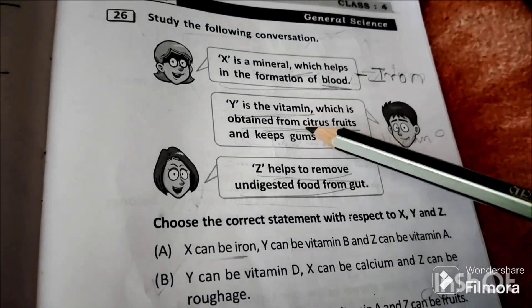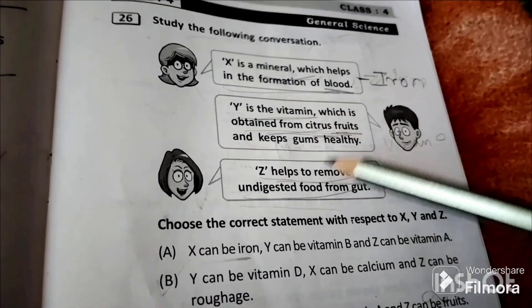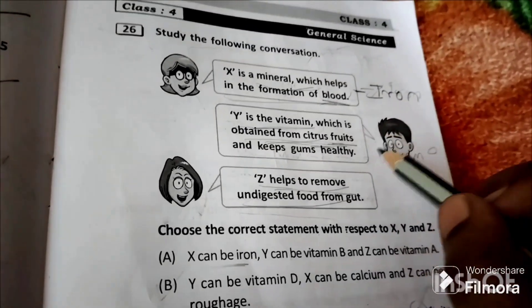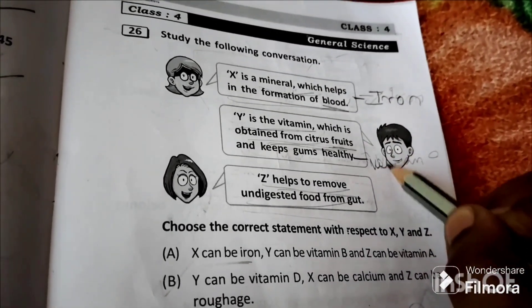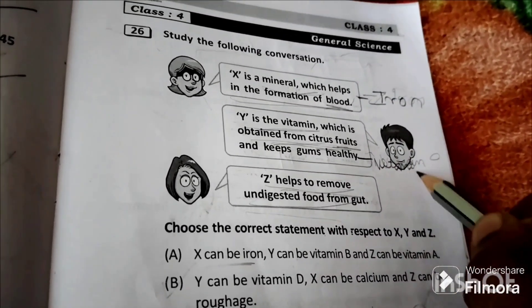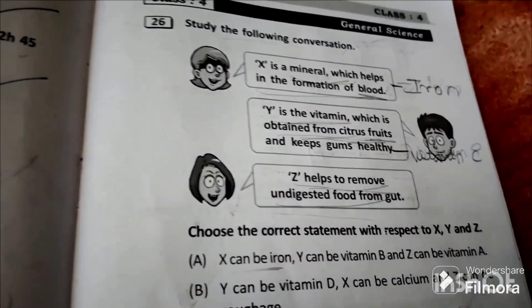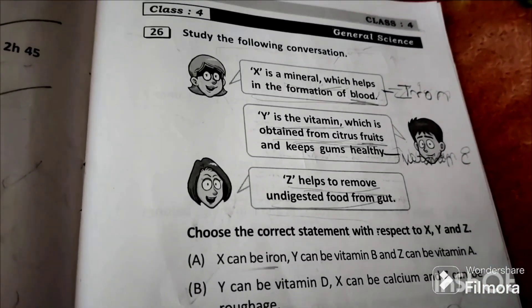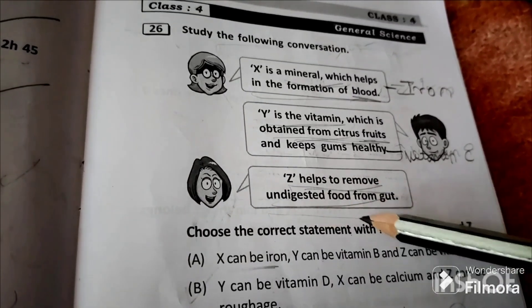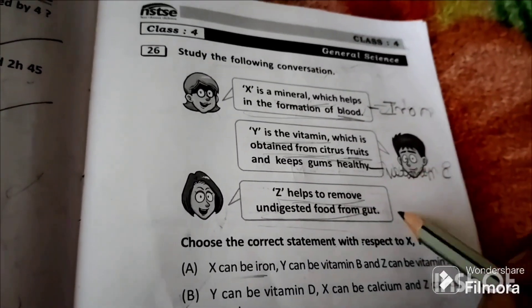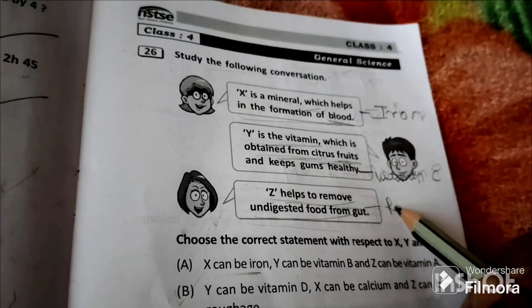Vitamin C is obtained from citrus fruits like lemon and orange. Z helps to remove undigested food from gut, so Z must be roughage.